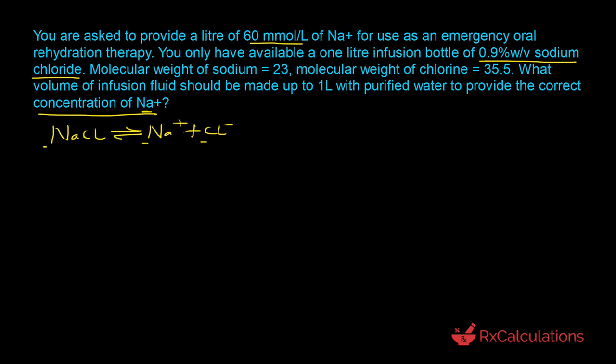The molar ratio between sodium chloride and sodium is one to one. Since we want 60 millimole of sodium cation in every liter, we also need 60 millimole of sodium chloride in every liter. Because we are preparing one liter of solution, the actual amount of sodium cation is 60 millimoles. If the volume were different, we would adjust accordingly.